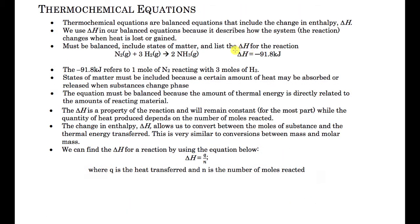We use changes in enthalpy in what are called thermochemical equations. Since chemistry deals with reactions, we tie changes in enthalpy into the balanced equation. For example, if nitrogen and hydrogen react to form ammonia, there's going to be a change in enthalpy. In this case, we have a negative value, which tells us the process is exothermic. Instead of putting heat as a reactant or product, we put it to the side using the change in enthalpy, indicating the system is losing heat.